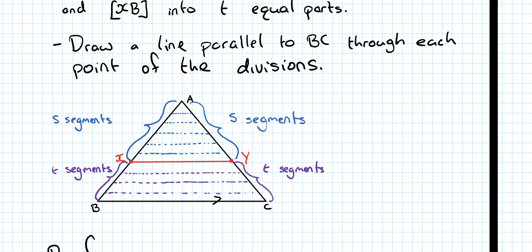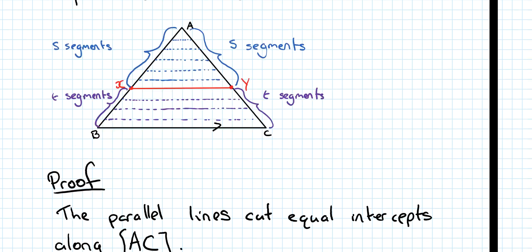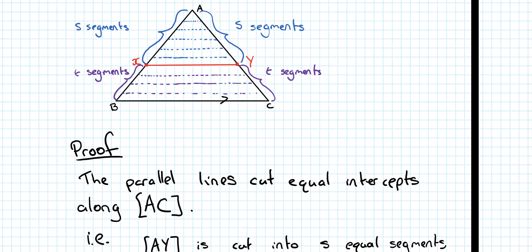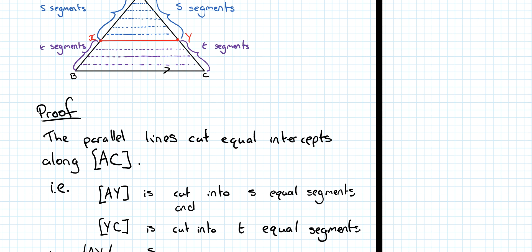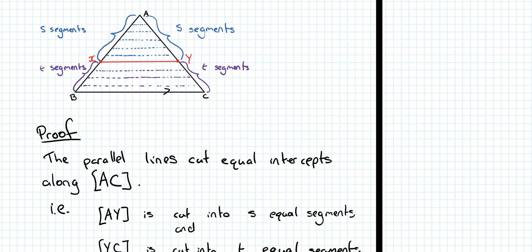Now, we talk about the actual proof. The proof. The parallel lines cut equal intercepts along AC. We can see that this segment here, along AC, we can see that it cut equal segments along the line here. One, two, three, four, five, and six. They are equal segments.